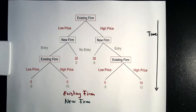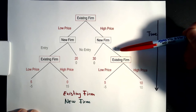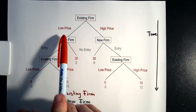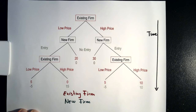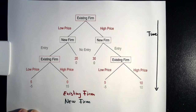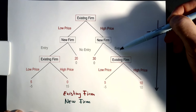Now let us consider a slightly different situation where we have the same game as before, but in this case prior to the new firm deciding whether to enter or not enter the market, we have the existing firm that can decide whether to price low or price high. To solve this game we again apply backward induction. Note that the number on top is the payoff for the existing firm and the number at the bottom is the payoff for the new firm.